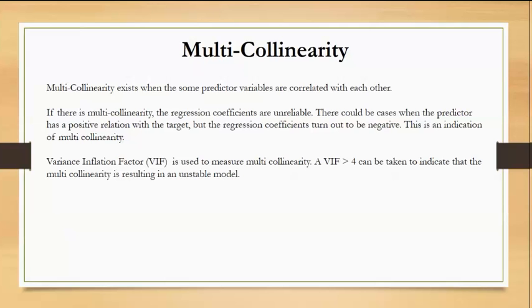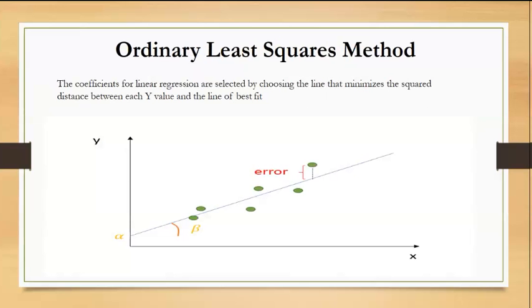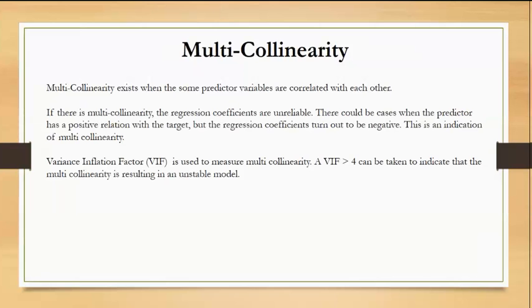Then you notice age and experience are highly correlated. Generally higher the experience, higher the age, right? So having two correlated variables, it disturbs the coefficients. The coefficients become unreliable even though the equation may produce fairly accurate predictions of the salary. This is what is meant by this point.